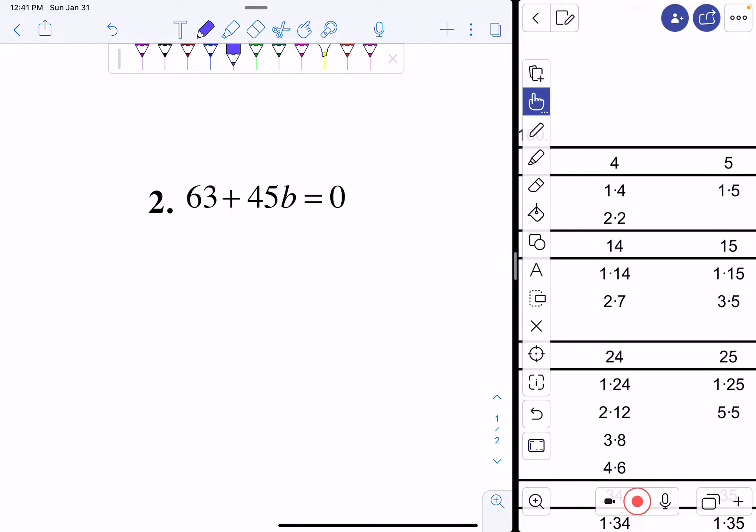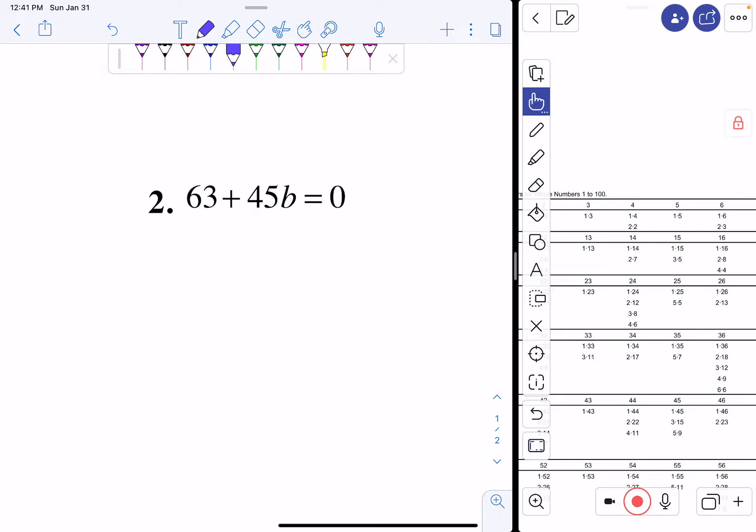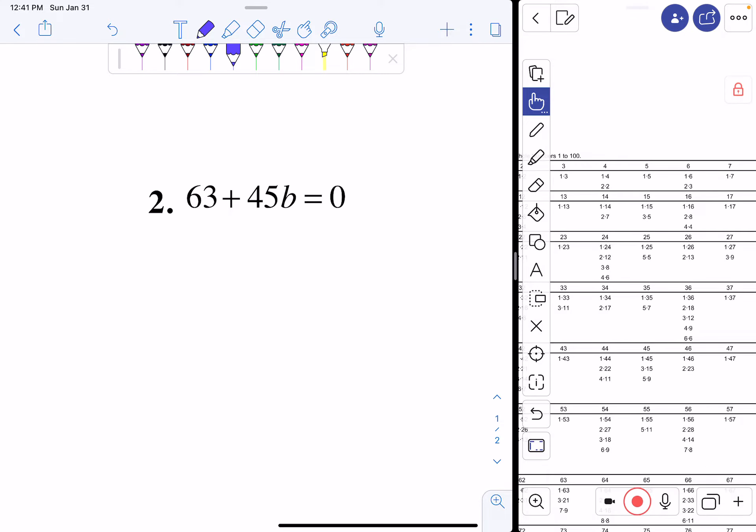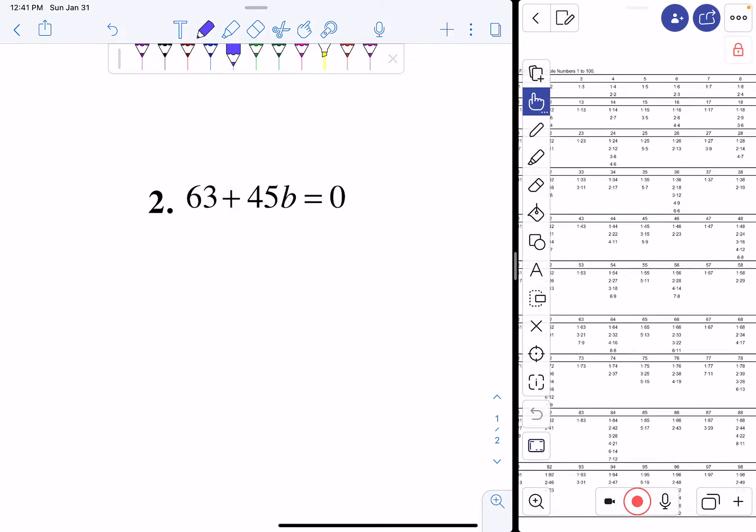Now let's go on to our next example. 63 plus 45b equals 0. If you look at this, there are no exponents, so I can actually just set this equal to 0 and solve. So if I wanted to, I could just solve it like a regular equation, or I can do my GCF leftover. Let's try to do GCF leftover.